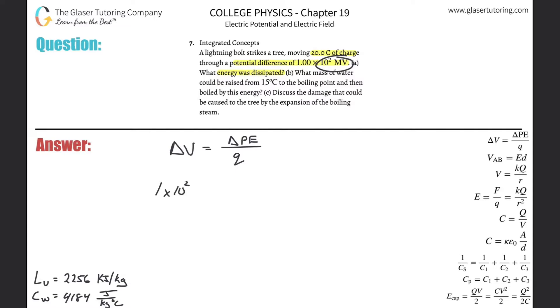into volts. Remember, mega has a prefix of 10 to the positive 6, so basically we multiply this by a million. So that'd be 1 times 10 to the 8 now, and then that'll be equal to the energy